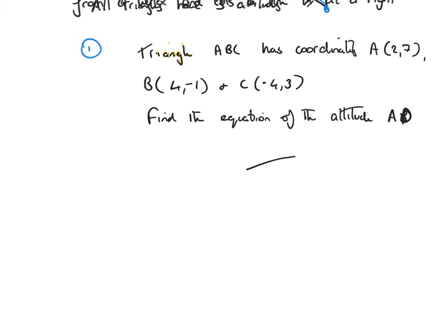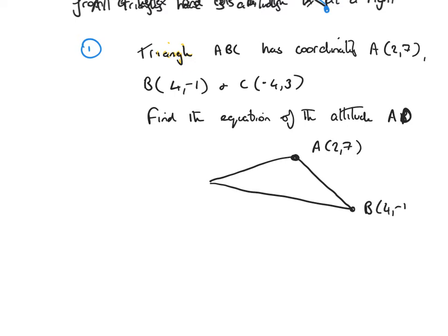So the triangle may look a bit like this. There's point A(2, 7), there's point B(4, -1), and there's point C(-4, 3). We're looking to find the equation of altitude AD, so it must come from A and cut the opposite side BC at a right angle. We label that foot of the altitude as D — so that's altitude AD.